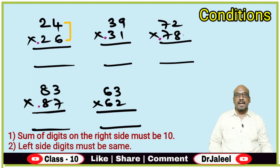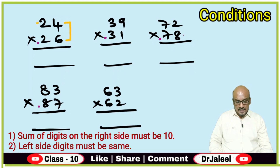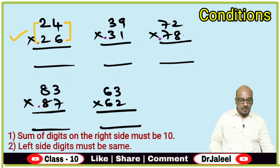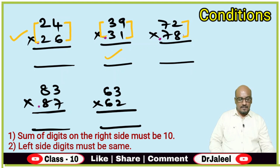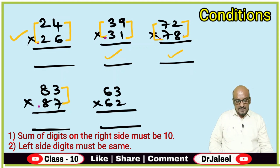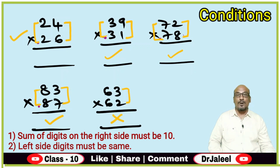On the right side, when we add 4 and 6, we get 10. So the first condition is: the sum of the digits on the right side must be 10. The second condition is: the left side digits must be the same. For example, 9 plus 1 is 10 and 3 and 3 are the same — you can use it. Similarly, 2 and 8 are 10, and 7 is the same — you can use it. 7 plus 3 is 10 and 8 and 8 are same — you can use. But if 3 plus 2 is not 10, you cannot use this method.